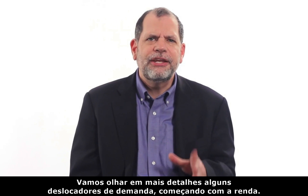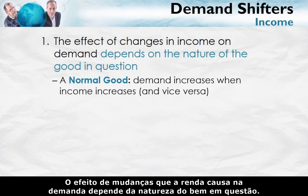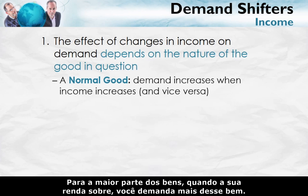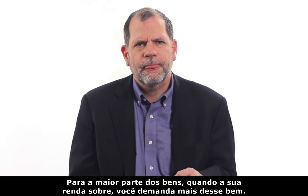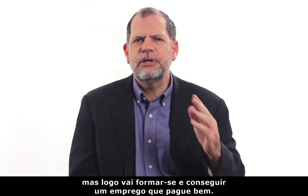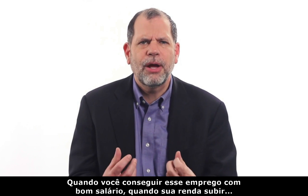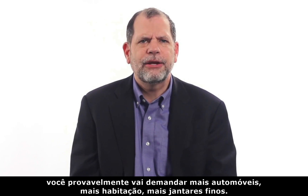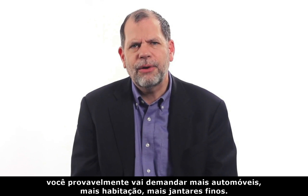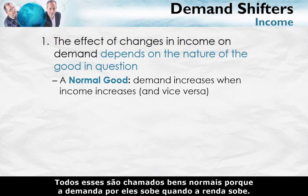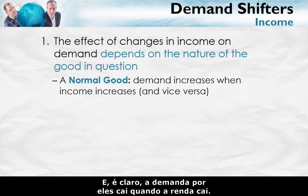Let's look in more detail at some of the demand shifters, beginning with income. The effect of changes in income on demand depends on the nature of the good in question. For most goods, when your income goes up, you demand more of that good. Imagine that you're a poor student right now, but soon you'll graduate and get a high-paying job. When your income goes up, you're probably going to demand more automobiles, more housing, and more fine dining. These are all called normal goods because the demand for them goes up when incomes go up, and of course the demand for them goes down when incomes go down.